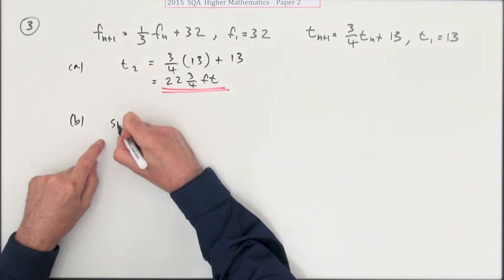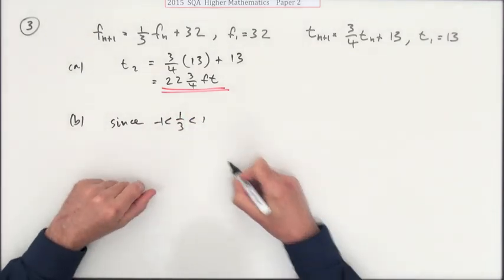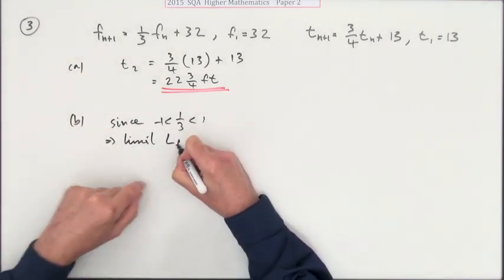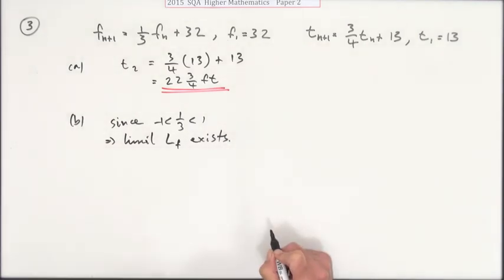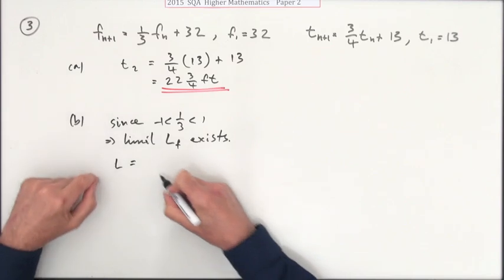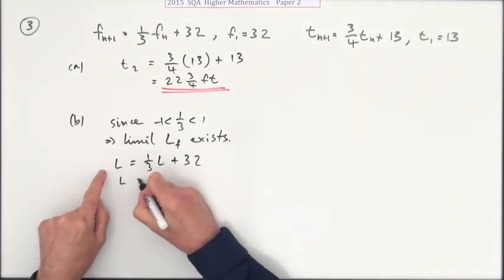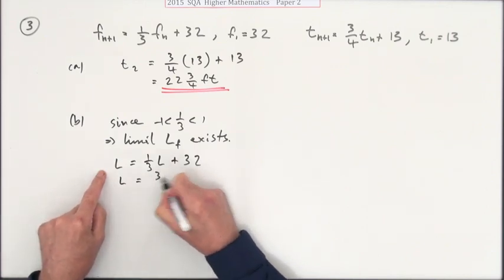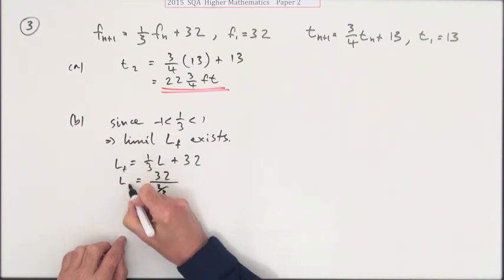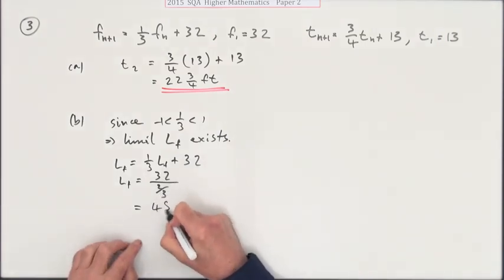For the frog, since one third is between one and negative one, or you could just use the modulus, that means a limit Lf exists. That limit would be b over 1 minus a, or you could just feed into the equation: L equals one third of L plus 32. You end up the same thing. Take that across and you'll have L minus a third, which is two thirds, so you end up with 32 over two thirds, which is 16 times 3, unfortunately 48.